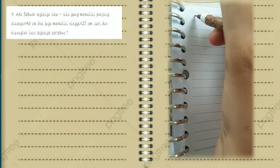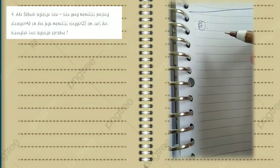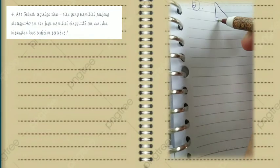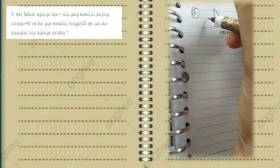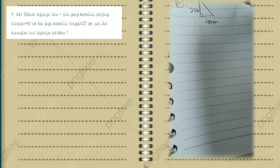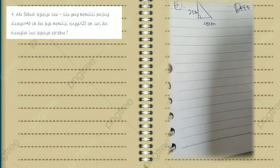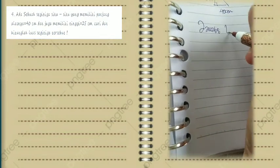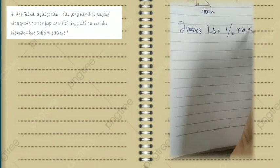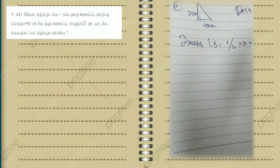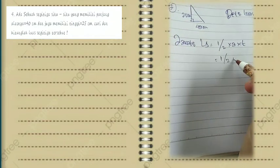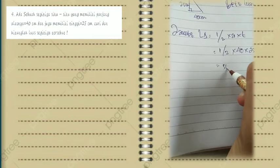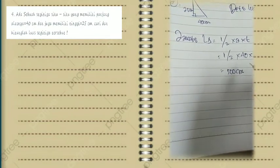Soal nomor 2 tentang bidang datar: soal cerita mencari luas segitiga siku-siku. Diketahui alas = 40 cm dan tinggi = 25 cm. Yang ditanya adalah luas segitiga. Rumus luas segitiga = ½ × alas × tinggi. Substitusikan: ½ × 40 × 25. Hasilnya 500 cm².